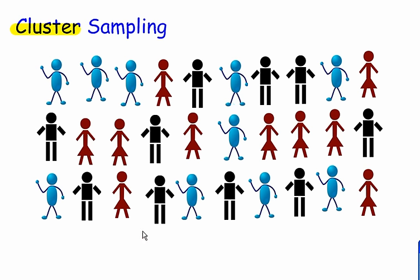I have my same population, and with stratified sampling, we grouped our people by color. We had all of our blue people, then our black people, then our red people, and we looked at them, and that was stratified.